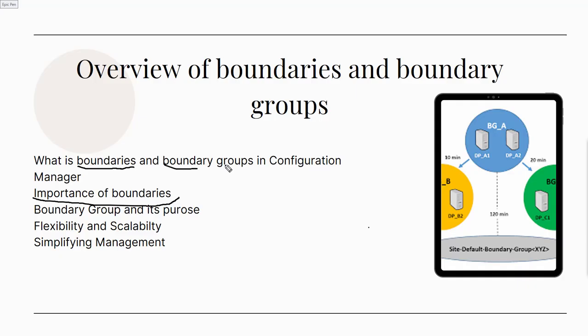Boundary groups are logical collections of boundaries that allow administrators to organize and manage boundaries effectively. Each boundary group can contain one or more boundaries, and a boundary can belong to multiple boundary groups. Boundary groups are essential for content distribution and client management communications because they determine which distribution points or management points are available for clients within the boundary group.